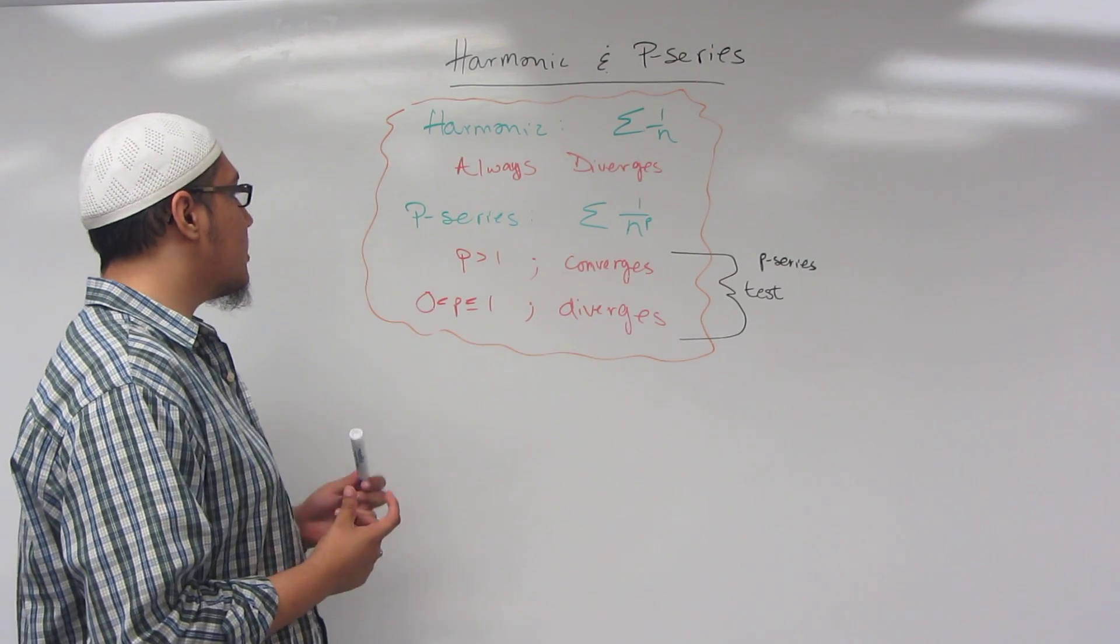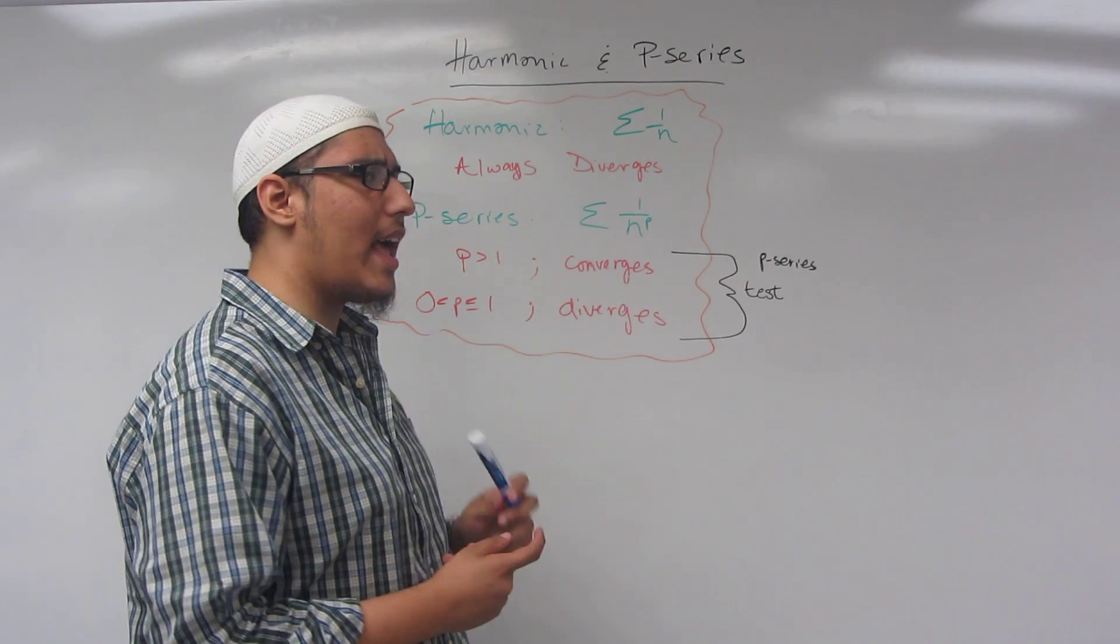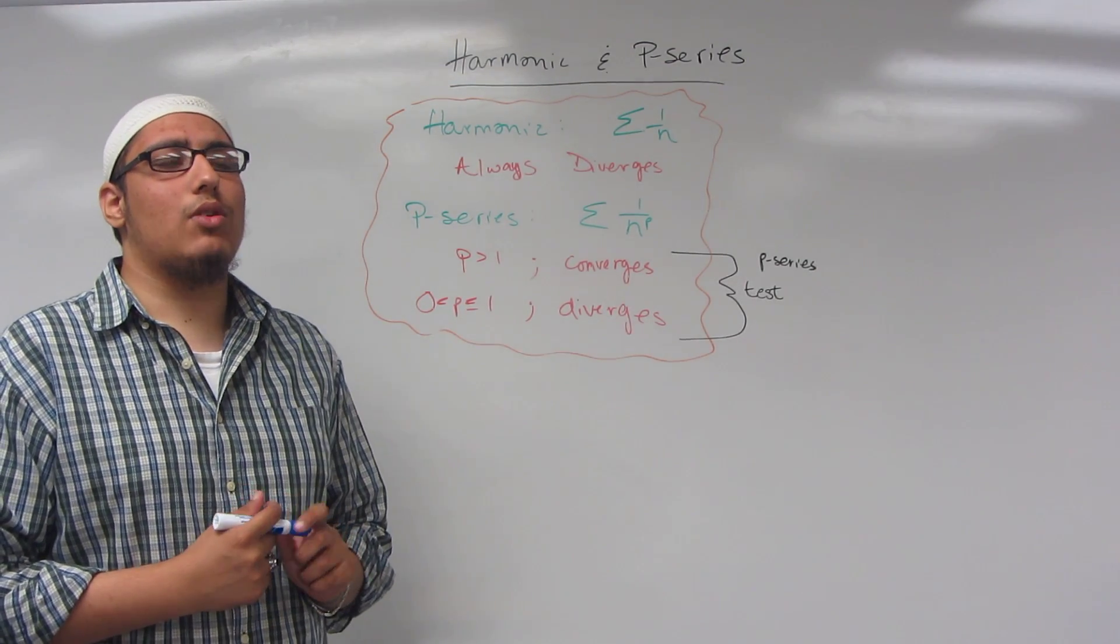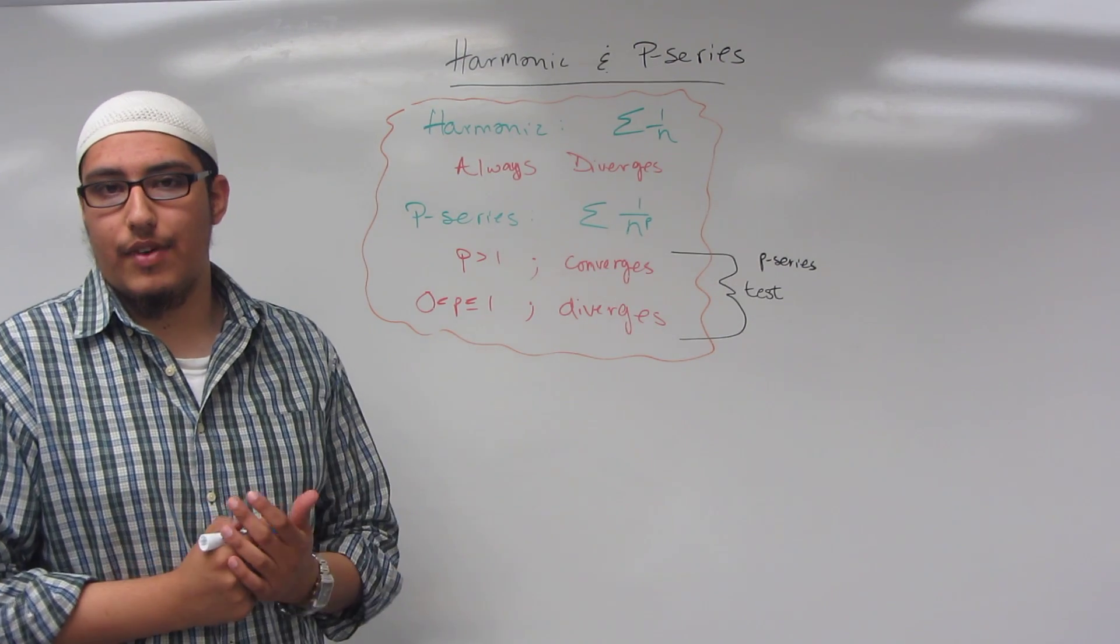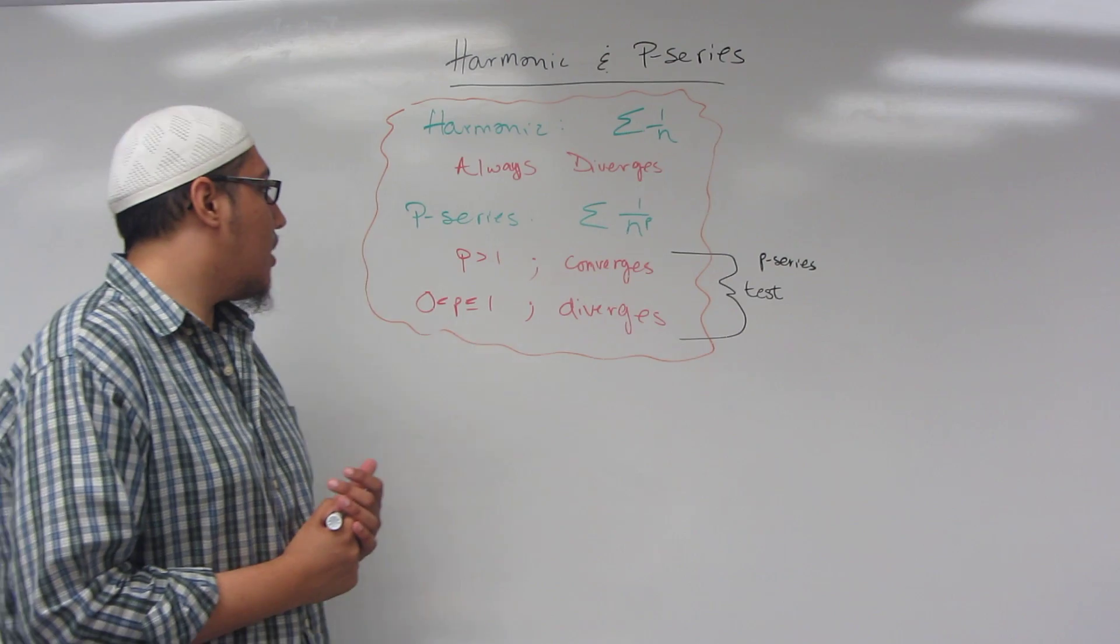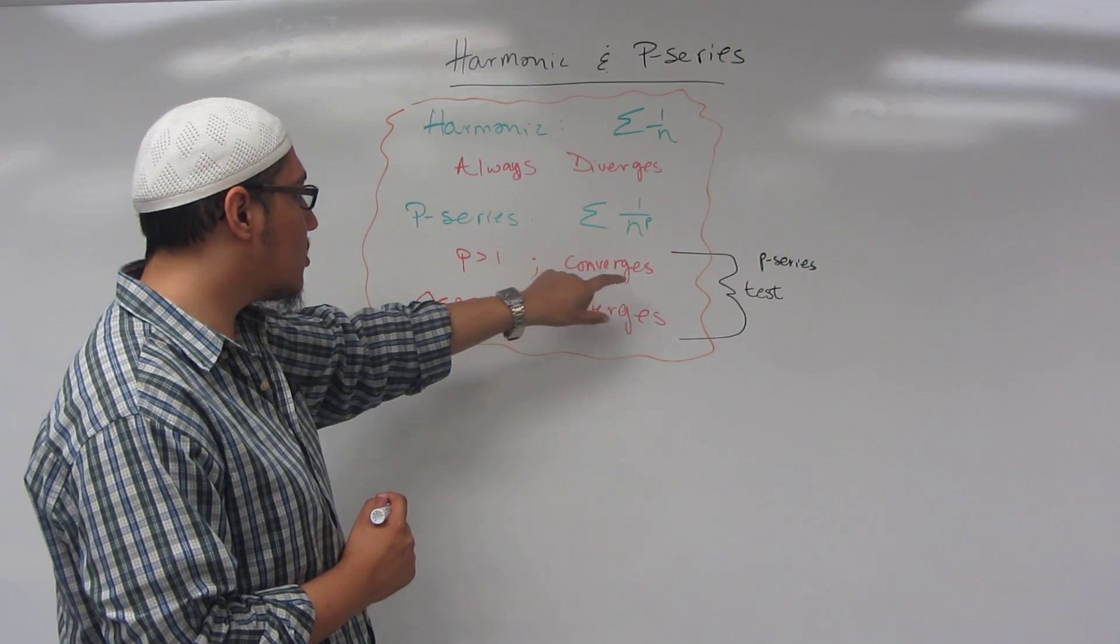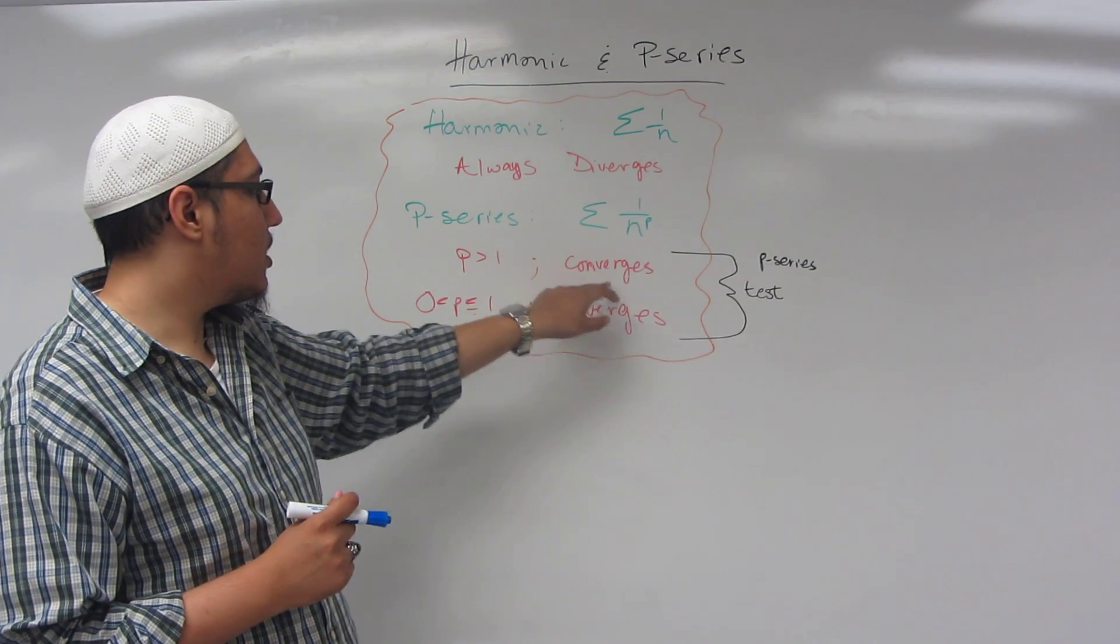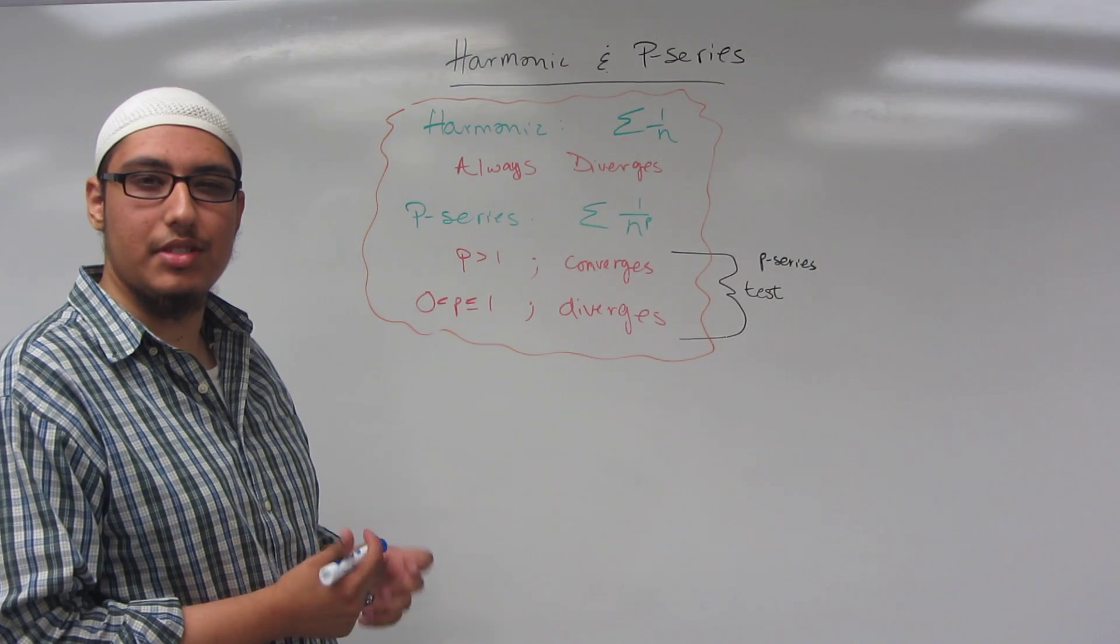Now the next series is a p-series, and that's sigma 1 over n to the p-power. Now what is the p-power? Well essentially it's some constant value. Now the idea is that if p is greater than 1, so if this constant exponent is greater than 1, then the series is convergent. If it is between zero and 1, then your series is divergent.